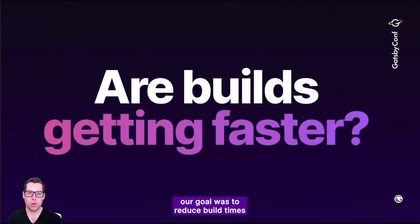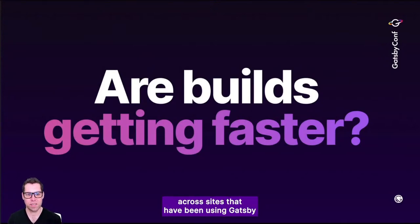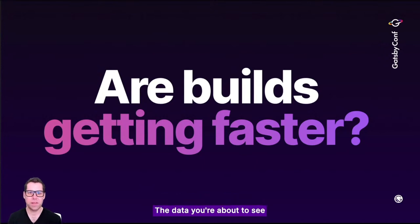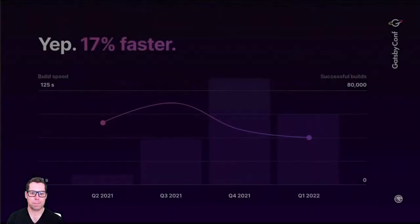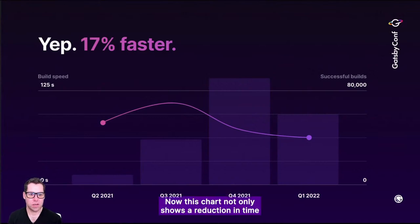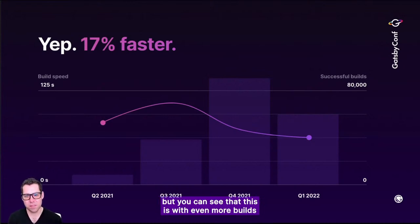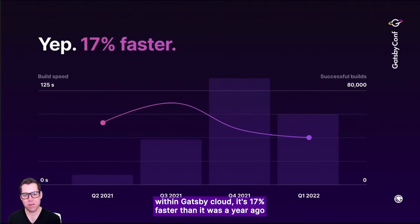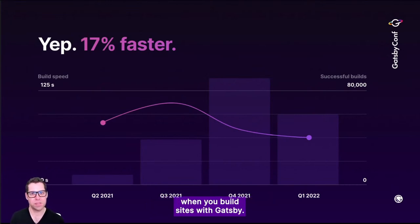Over the course of last year, our goal was to reduce build times for people building Gatsby sites. Let's take a look at the experience across sites that have been using Gatsby and Gatsby Cloud the longest, and have kept current with the latest version of Gatsby. The data you're about to see is from sites that are currently on Gatsby 4. So did we get faster over the past year? You bet — 17% faster overall. Even with a higher volume of builds within Gatsby Cloud, it's 17% faster than it was a year ago.